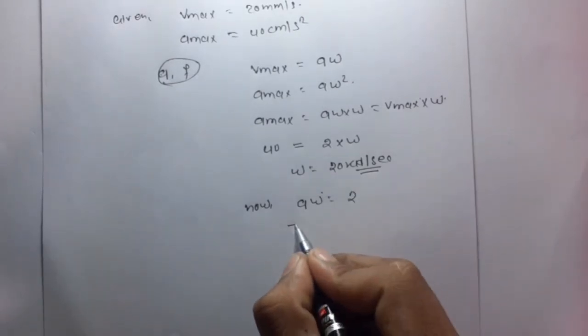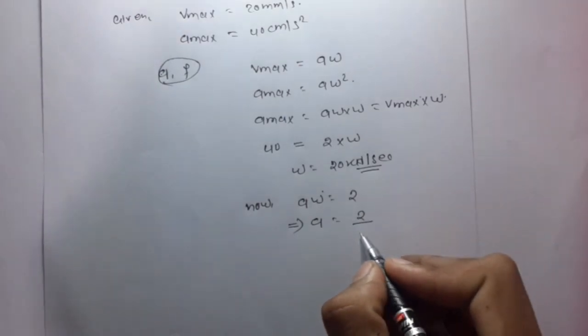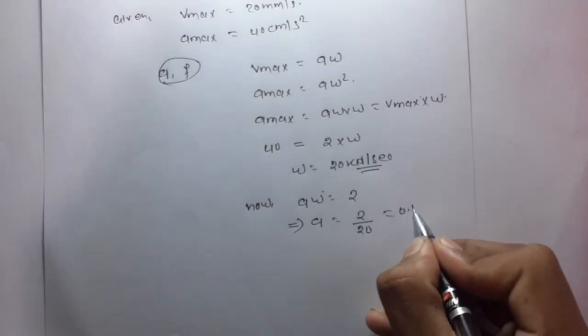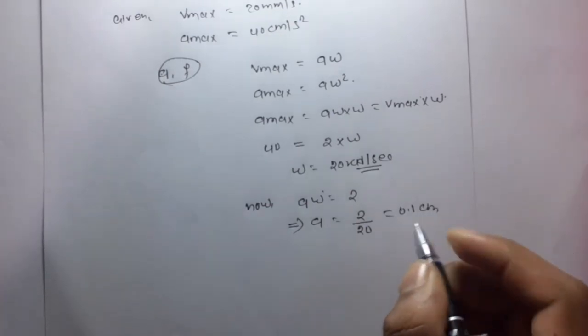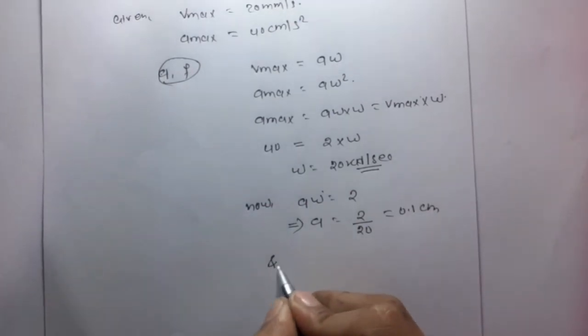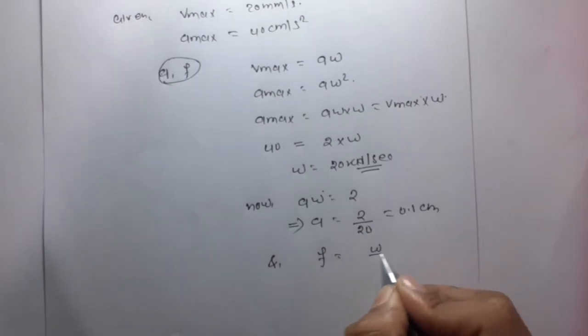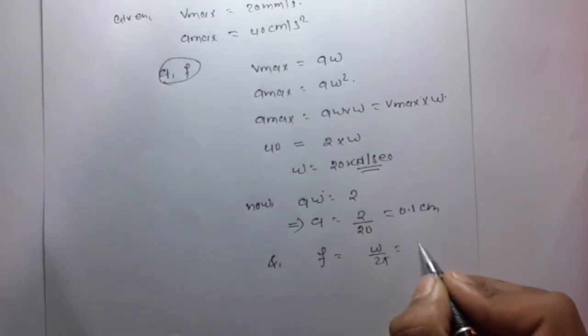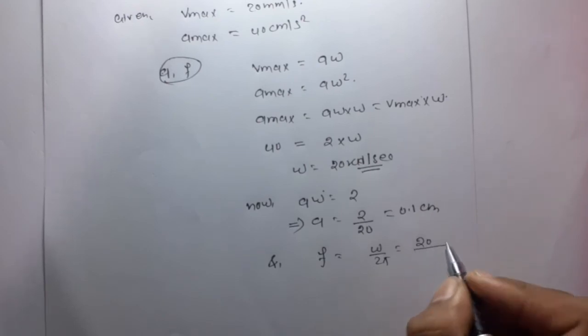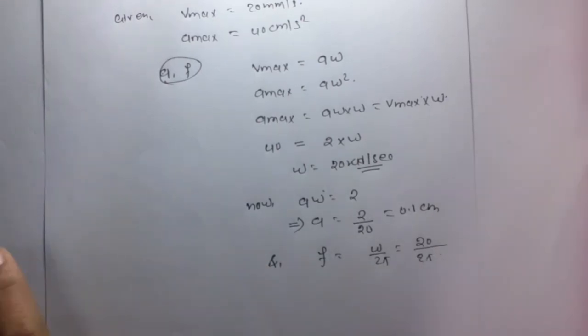So A equals 2 divided by 20, which is 0.1 cm. Frequency F is given by omega divided by 2 pi. This is 20 divided by 2 pi, which equals 3.18 Hz.